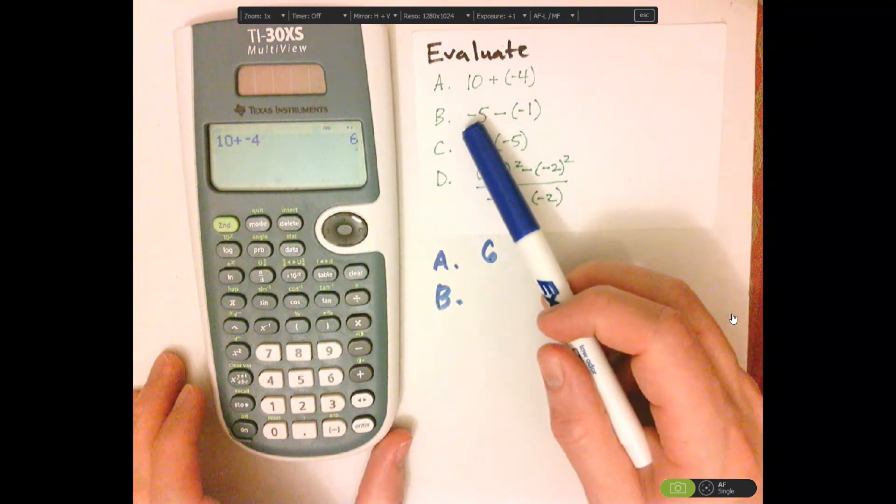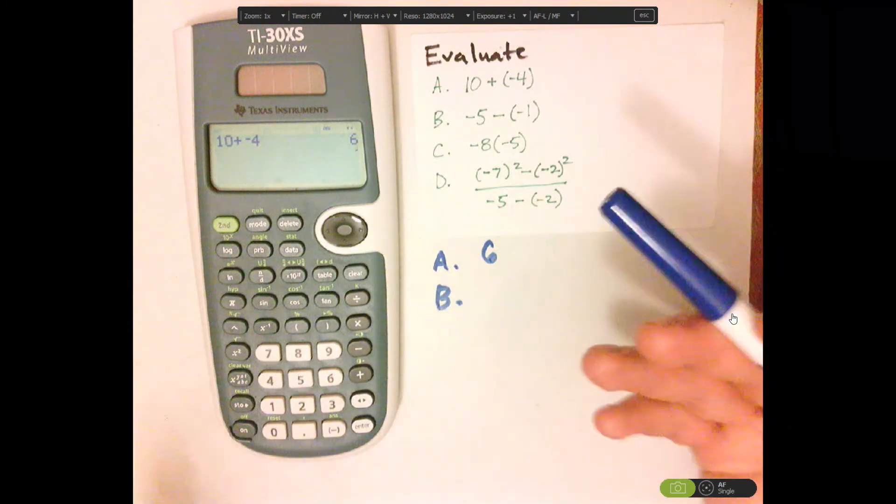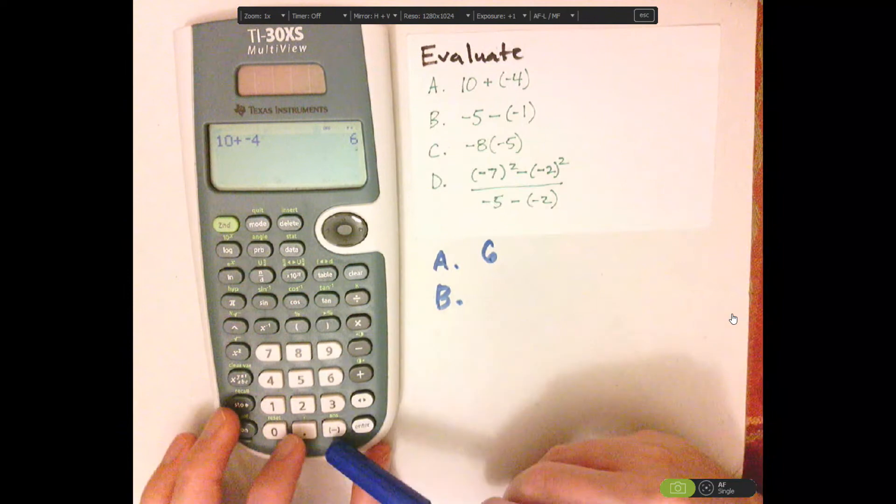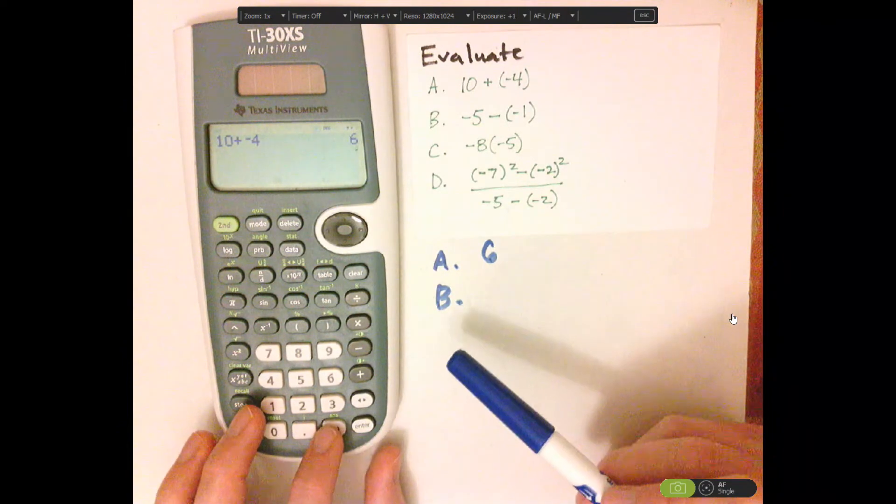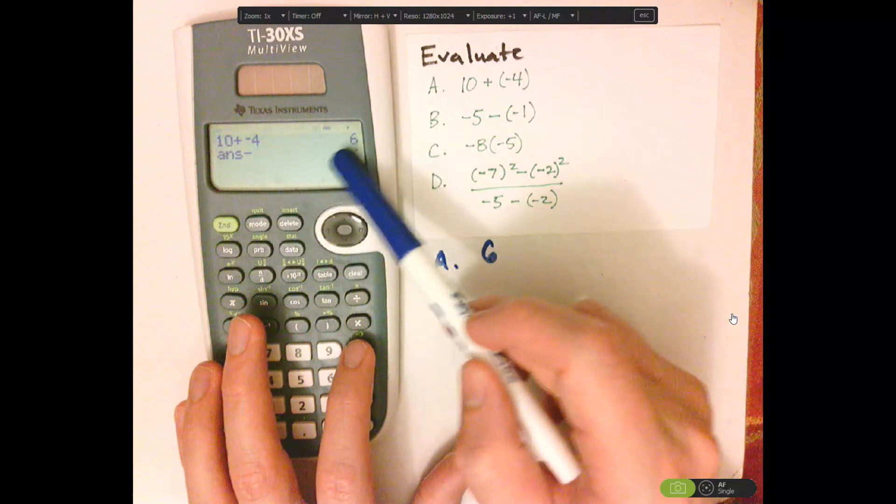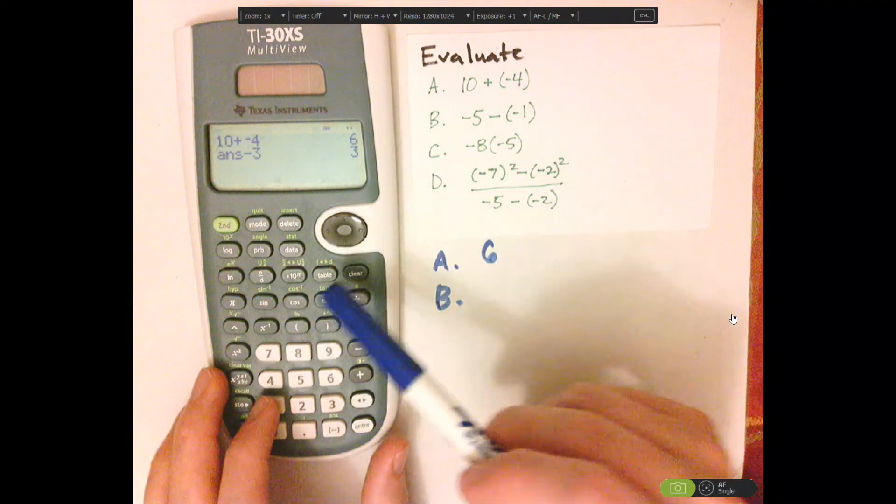This first sign, since it's an operation between two numbers, this would be a negative sign. So you need to push the negative button. If I push the minus sign, notice it's going to say answer, that's because it's grabbing the 6. You see that?